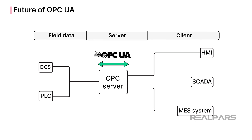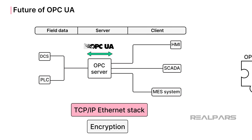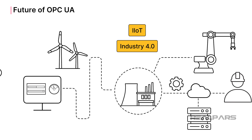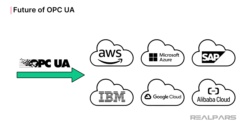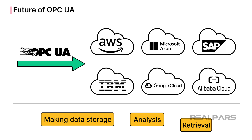Because OPC UA is based on the TCP/IP Ethernet stack, as Ethernet evolves, so will OPC UA. That means OPC UA will be able to take advantage of advances in cybersecurity measures, such as encryption. Efforts like the collaboration between OPC UA and TSN, or Time Sensitive Networking, will lead to creating comprehensive solutions by merging the strengths of different technology standards. OPC UA is positioned to be the cornerstone for IIoT communications solutions for manufacturing systems, providing seamless data integration across devices, machines, and systems. Software developers are realizing the value of adding OPC UA to their out-of-the-box solutions for integration with various cloud platforms, with the potential for making data storage, analysis, and retrieval more efficient.